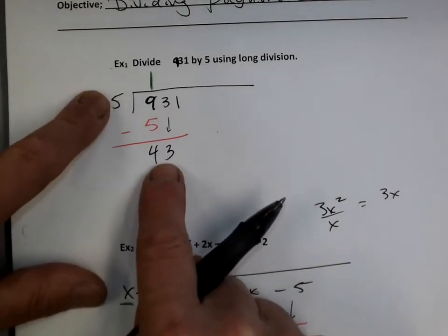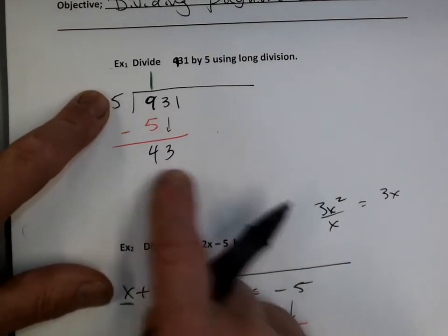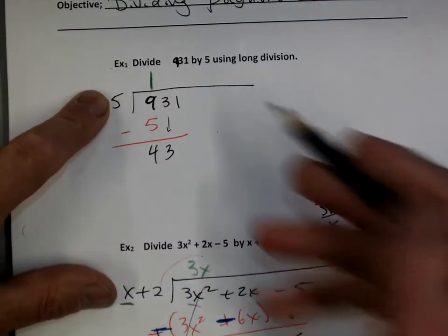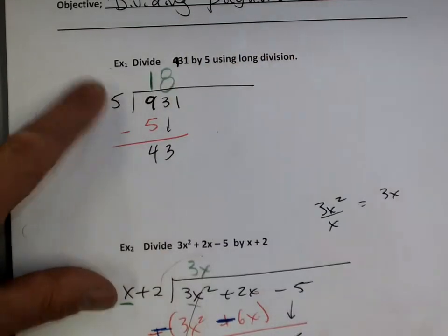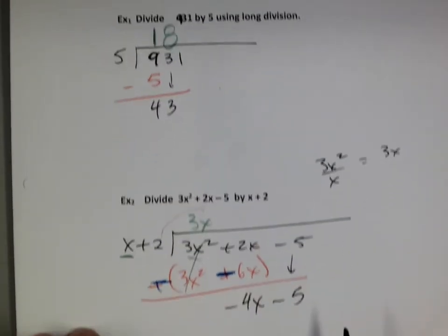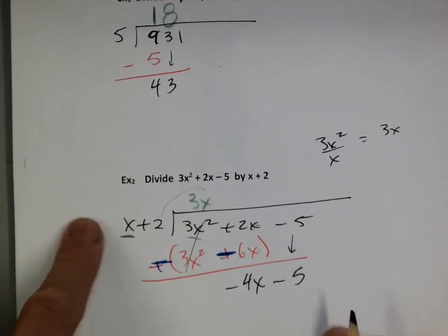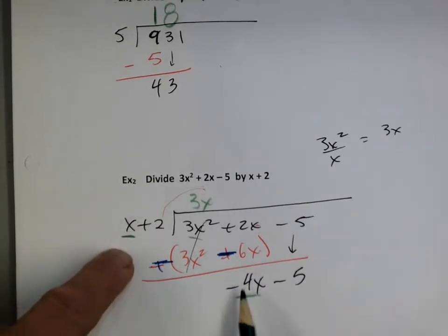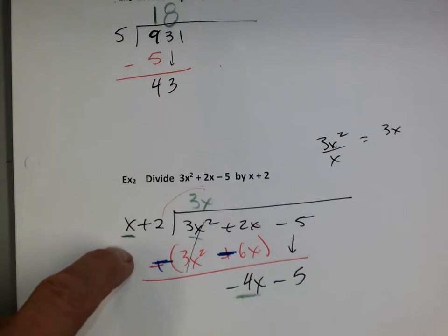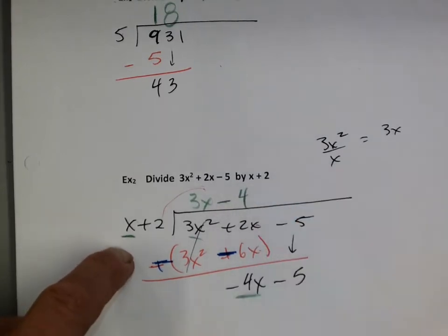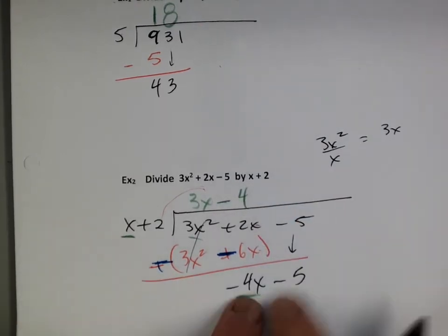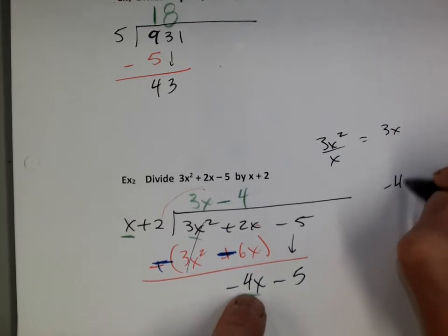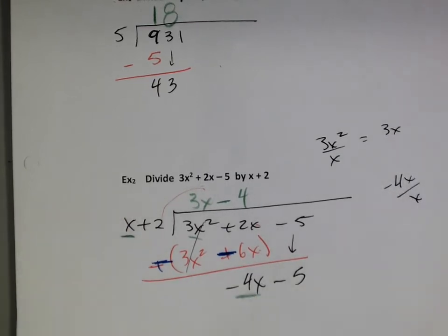5 goes into 43 eight times — I'm going to go 8. And then on this one, x goes into negative 4x negative 4 times. Goes in negative 4 times. And if you're not sure, you can do a little division on the side: negative 4x divided by x — oh yeah, that's negative 4. A little side division. That helps.